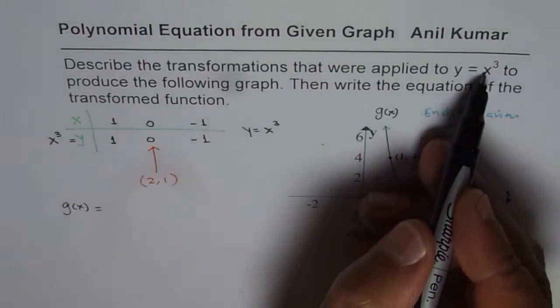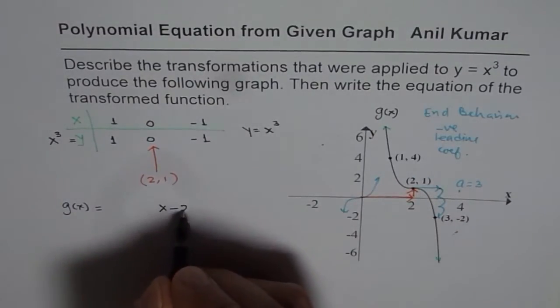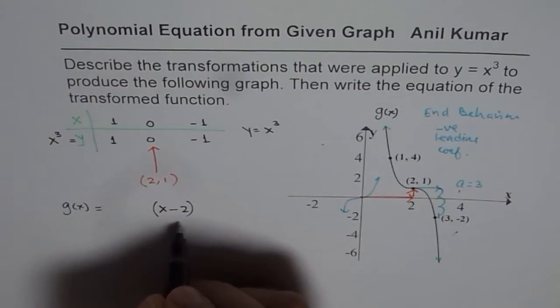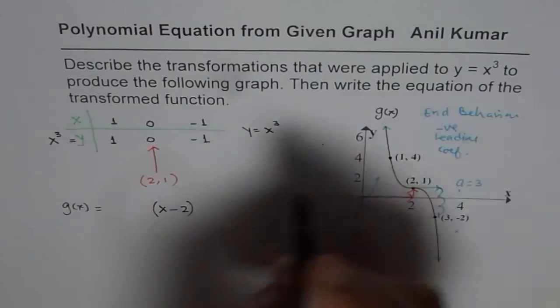We'll start from inside. It is x. Move two units to the right means x - 2. We'll assume there is no horizontal stretch or compression. We'll put all of them on the vertical side. x³ is the function.